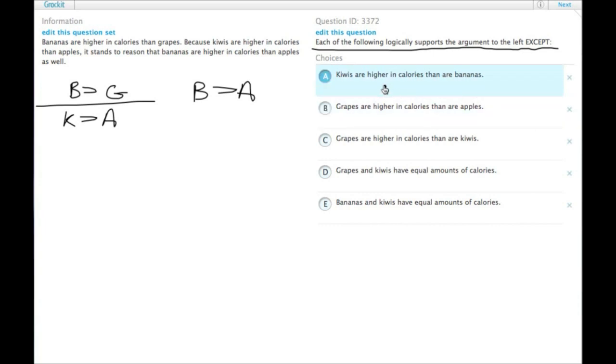So, A tells us that K is greater than B. We know then that K is greater than B. We also know that K is greater than A, and that B is greater than G, but we don't necessarily know the relative relationships of B and A compared to K. A could be greater than B, A could be less than B. All we know is that both of them are less than K. So actually, that gives us choice A as our answer.